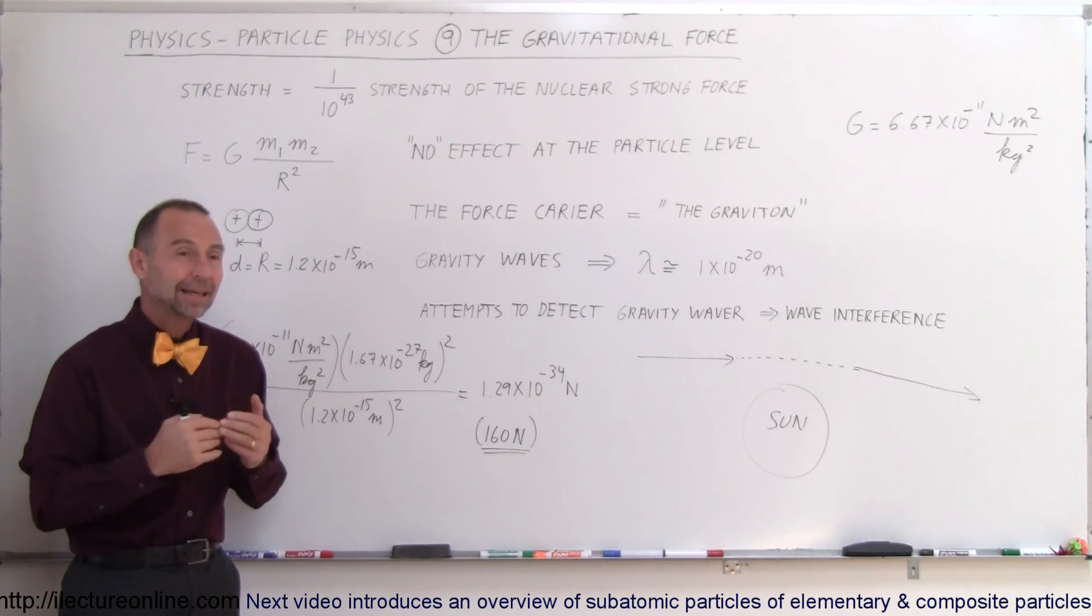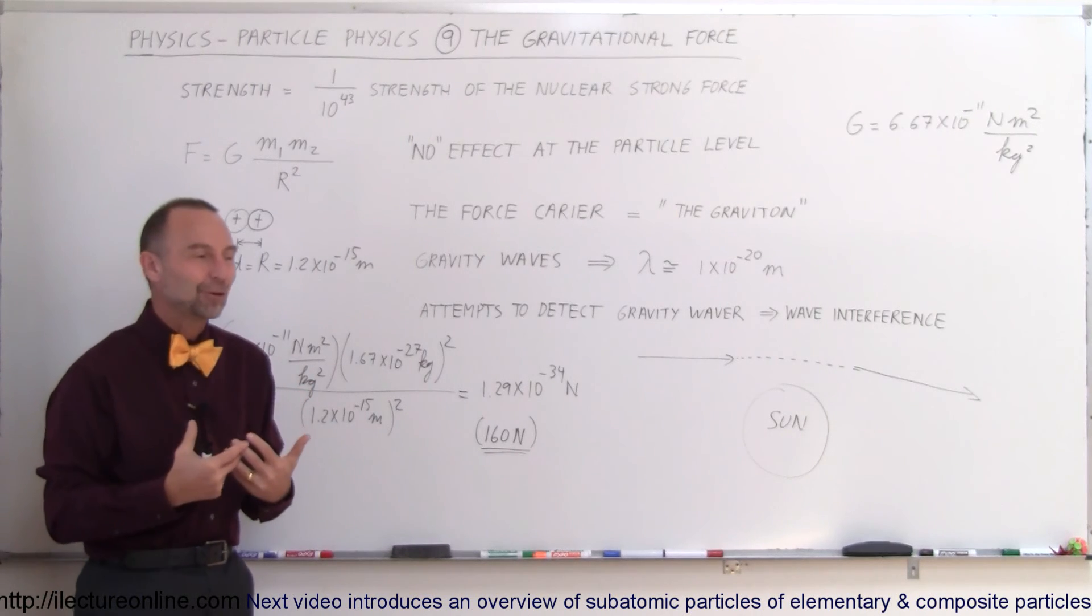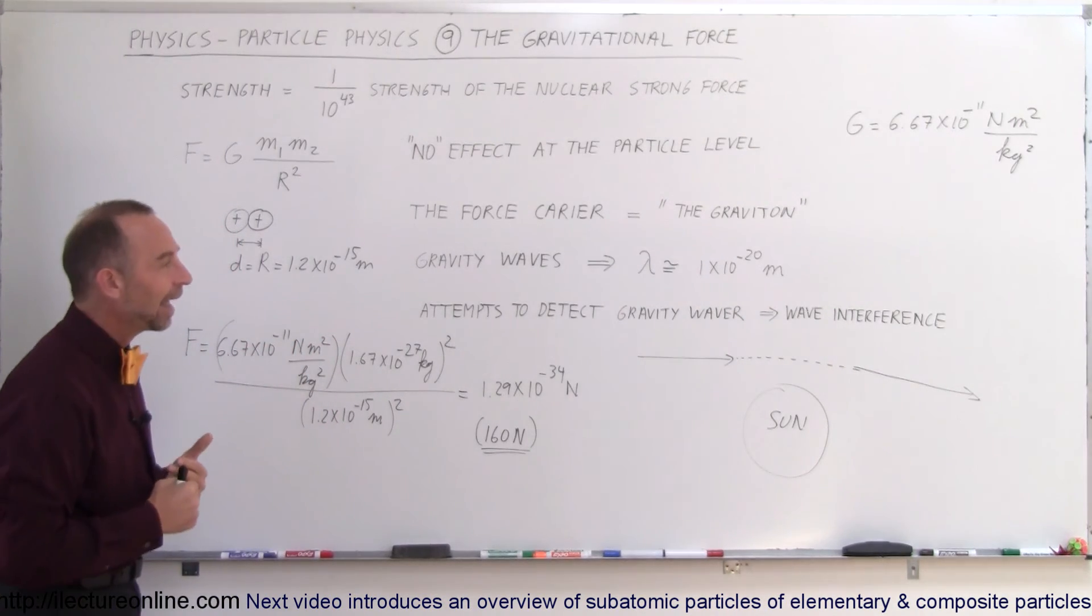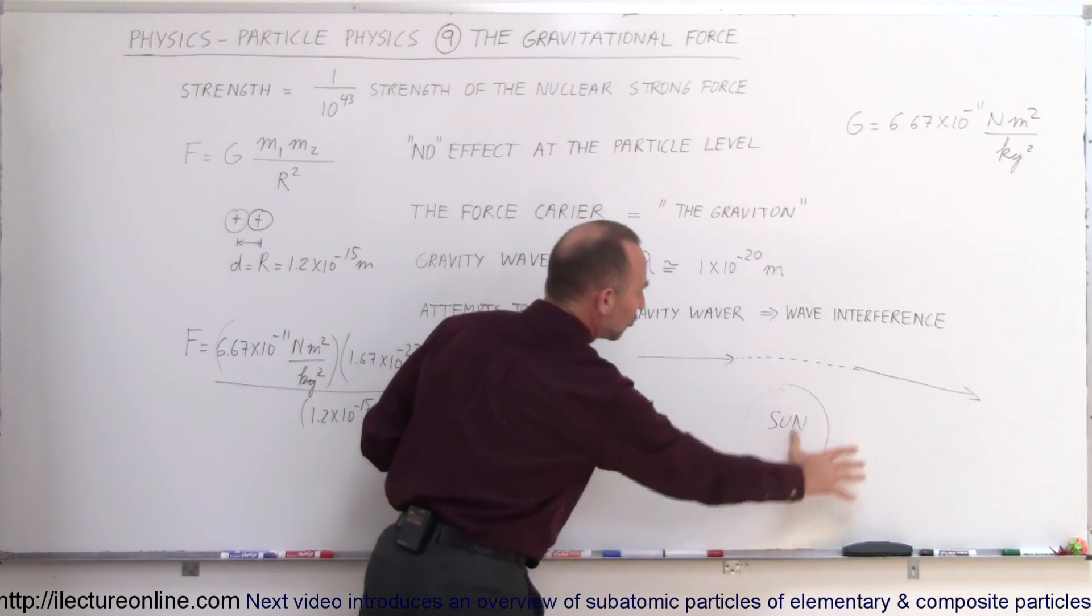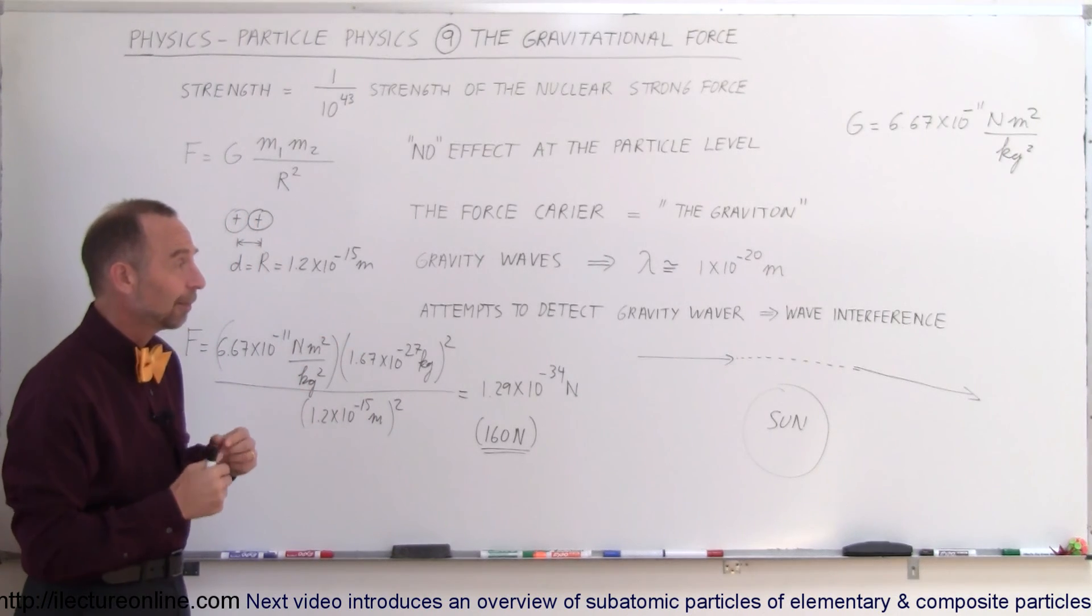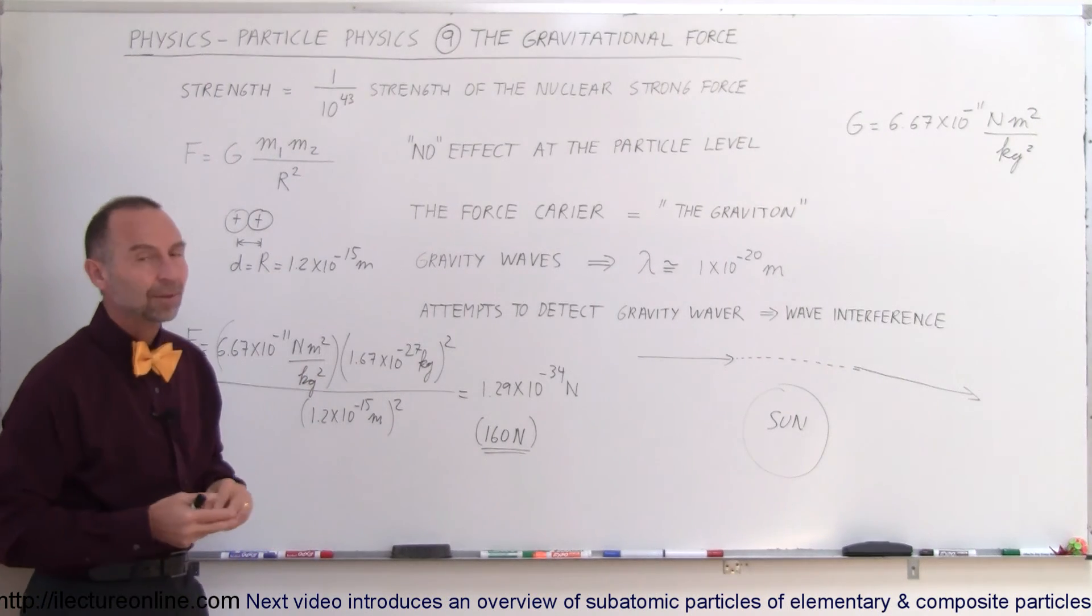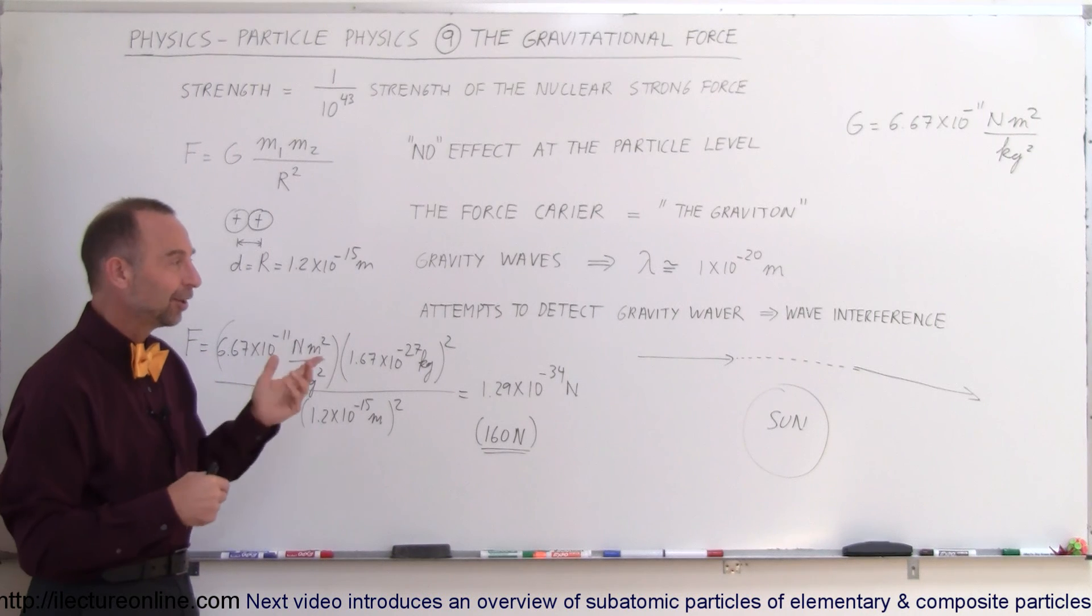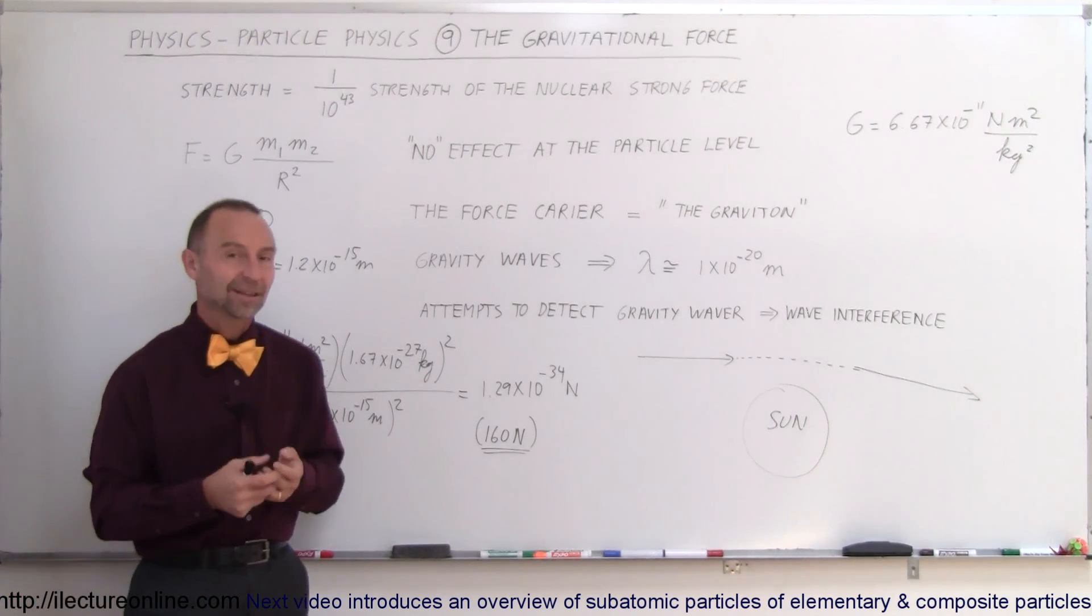So gravity is probably the most understood from an everyday experience kind of force, but the least understood from a scientific point of view. We haven't been able to figure out what a graviton is, if it exists. We haven't been able to show that gravity waves exist, and we haven't been able to really understand what is the connection between the change of space caused by mass being placed in space, causing space to bend in four-dimensional space, and how gravity works at the subatomic level. But give us time. Things that we didn't think were possible 100 years ago are possible today, so one day we probably will be able to figure out what gravity waves are, be able to show that they exist, and we probably will find something like a graviton.